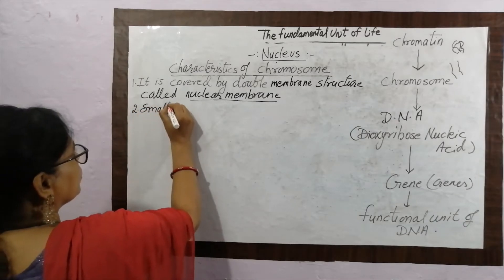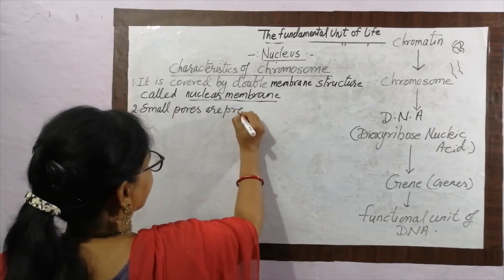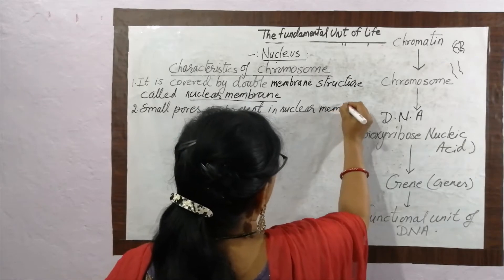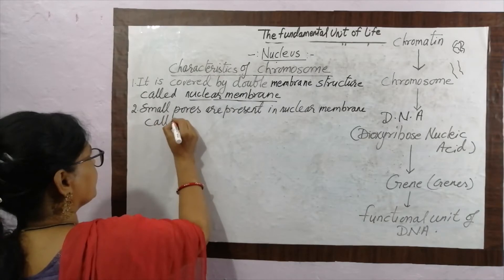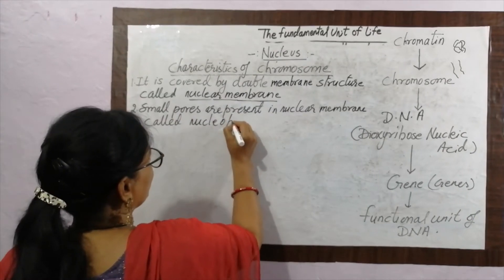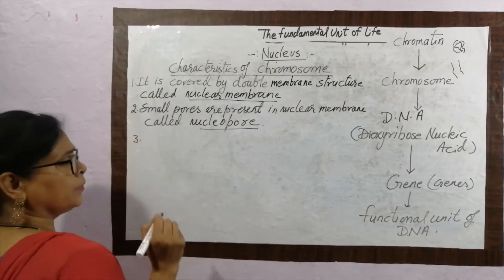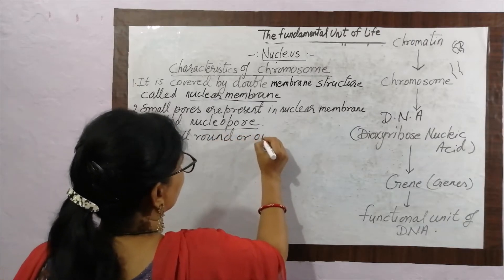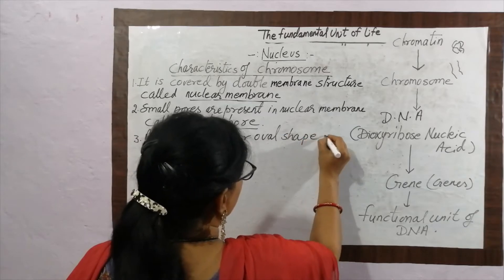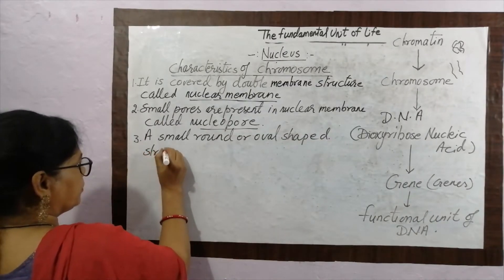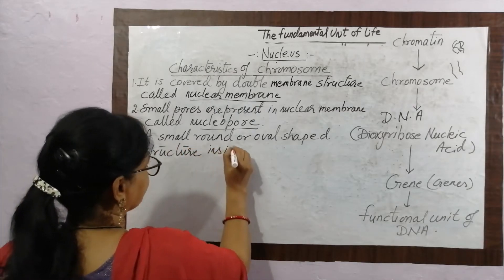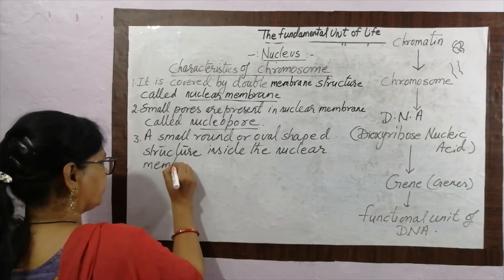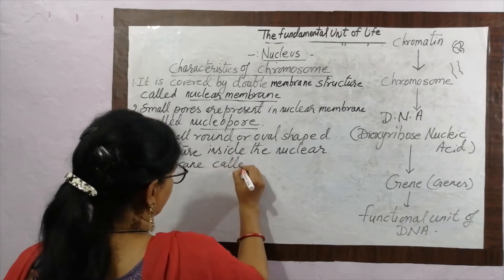The second characteristic: small pores are present in the nuclear membrane, called nuclear pores or nucleopores. A small round or oval shaped structure is present inside the nuclear membrane, called the nucleolus. It is the controlling unit of the cell.